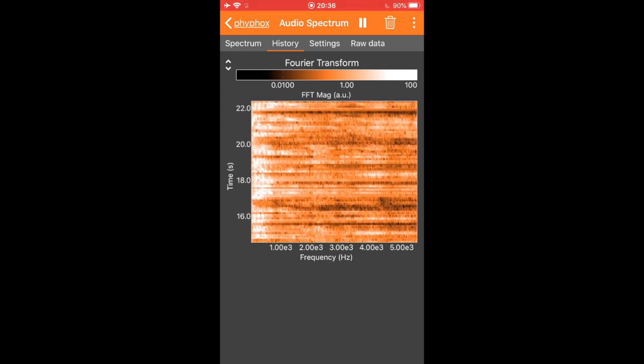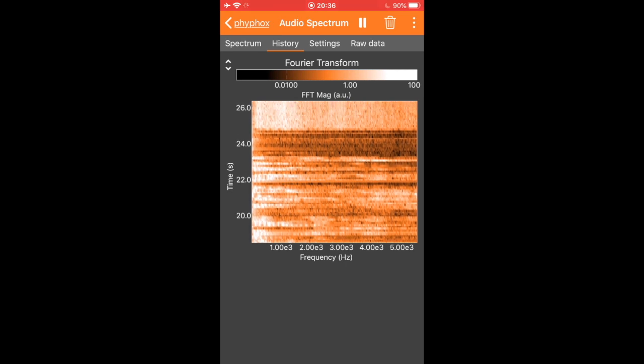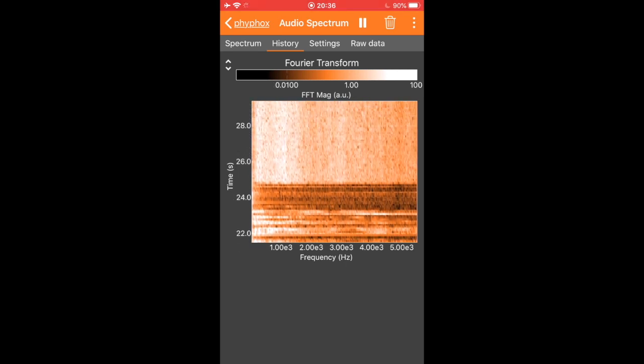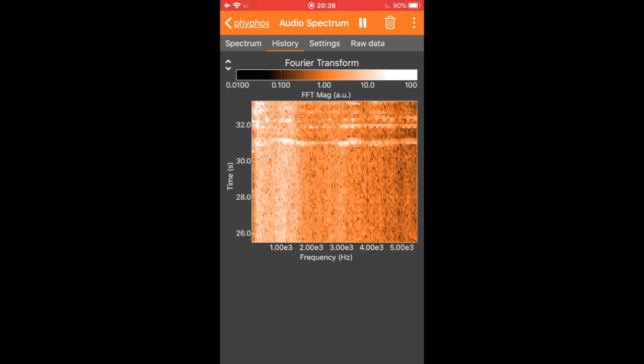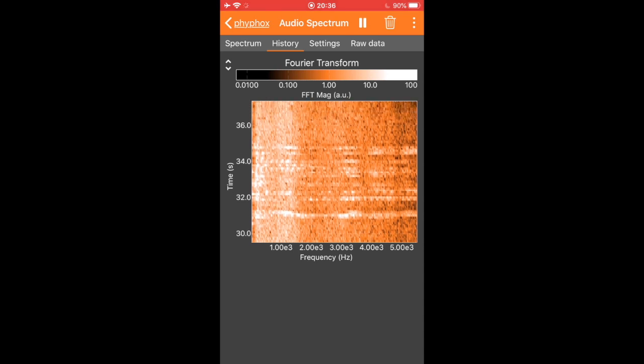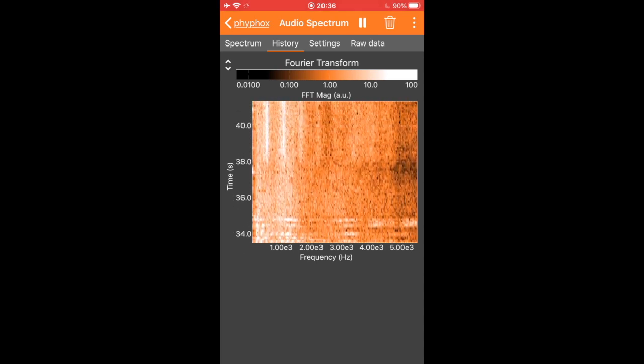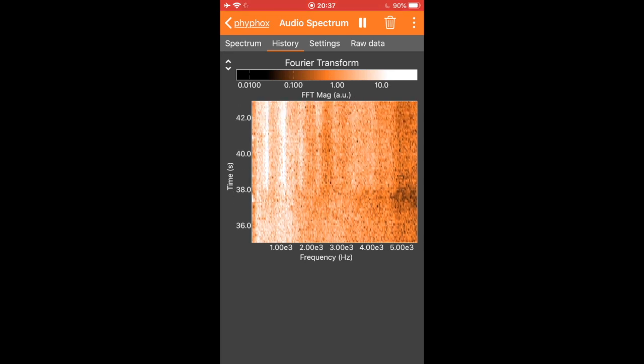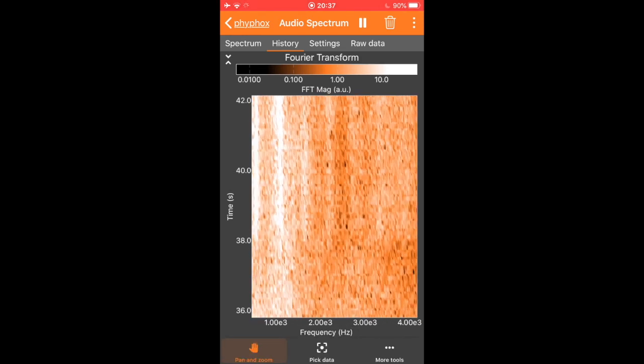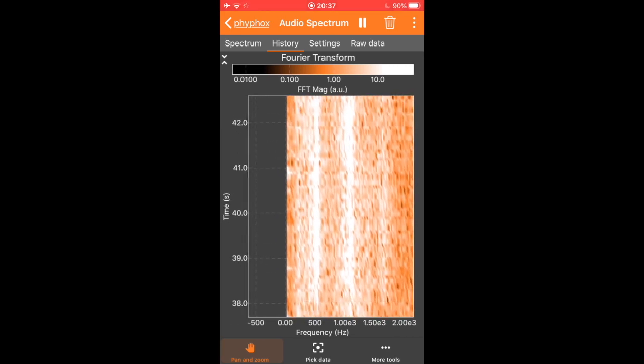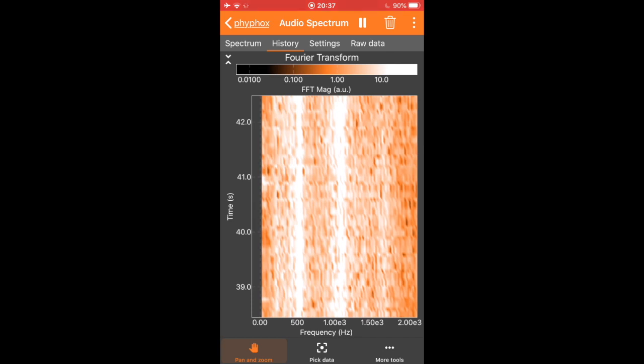So let's play the sound without the cardboard tube. Now interpose the tube between the microphone and the sound. You'll notice that only certain frequencies propagate through the tube. We are going to go ahead and measure the fundamental frequency or the first harmonic by tapping on the graph and using the pan and zoom to zoom in on the first white stripe in the spectrogram. We can use the pick data button to select it and determine what the frequency of this sound is. I seem to be getting a lot of standing waves at about 520 hertz.